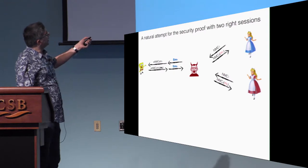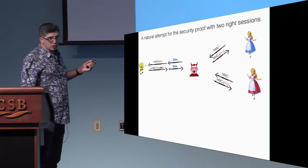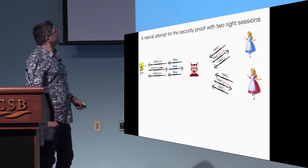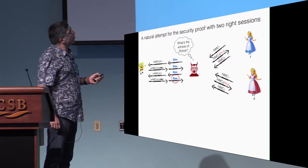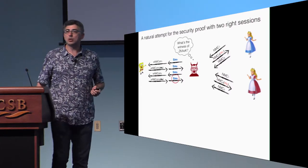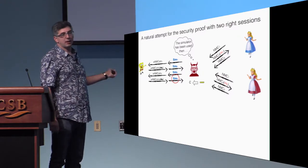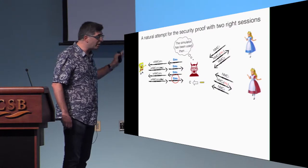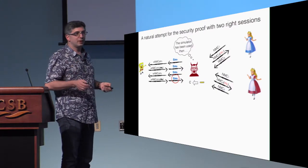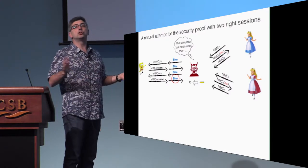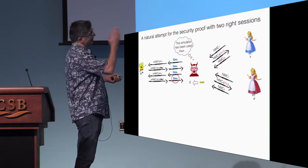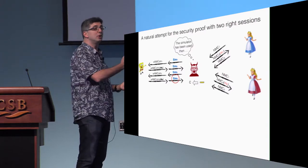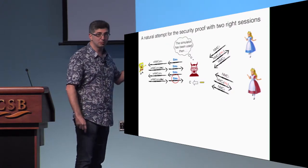You might think: okay, but I have a proof, so there will be a reduction that breaks a primitive. Let's see. We go back to the construction: the weak non-malleable commitment and the zero-knowledge argument of knowledge. In a sequence of hybrids you end up using the simulator on the right — that's why it's zero knowledge. But the man-in-the-middle, when he understands there's a simulator on the left, will just complete a random session. So in the real game he mauls; in the security proof when you switch to the simulator, he might just stop mauling and you don't reach a contradiction.